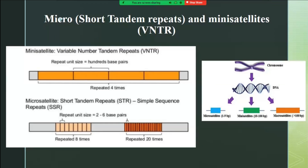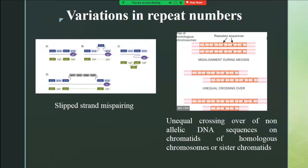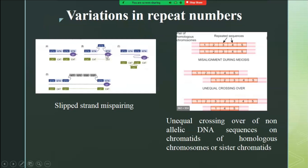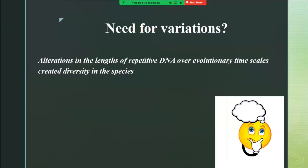Microsatellites are less than nine base pairs and are arranged in tandem. Not everyone has the same repeat number — it's highly polymorphic, and this is the reason they form the basis of PCR testing. Variation occurs because during DNA replication the machinery gets confused since all repeats are the same, causing slip strand mispairing. During meiosis, unequal crossover due to malalignment also results in variation in repeat numbers, creating diversity in species.